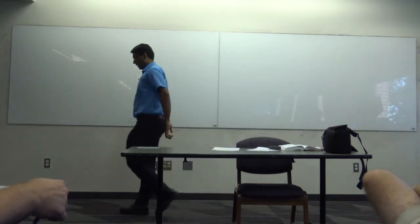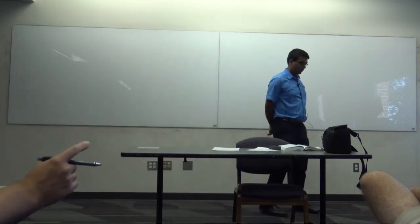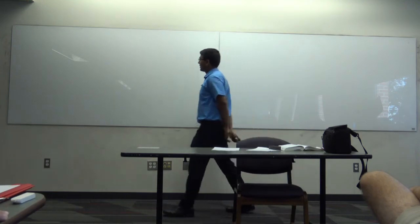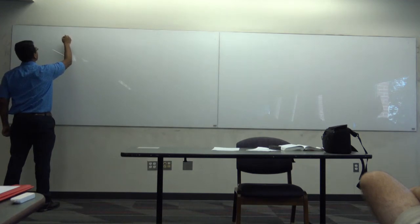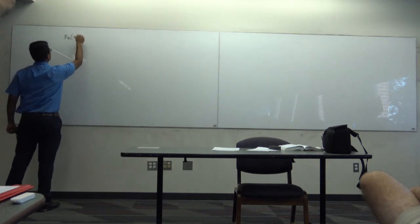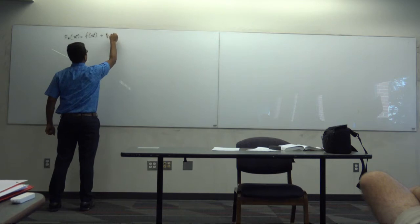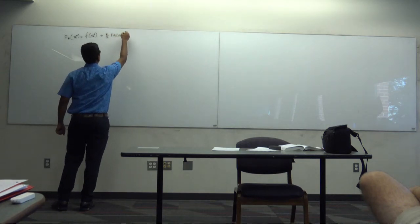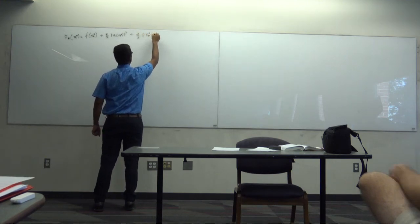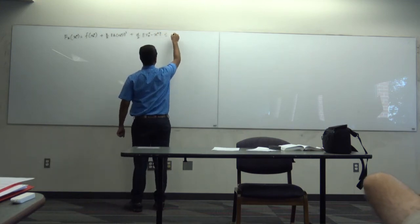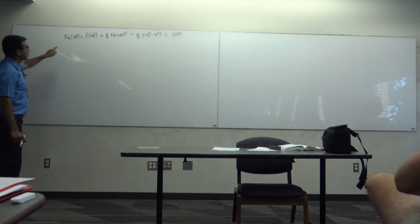Let us continue our discussion about the Lagrange multiplier theorem. There was a hiccup in our previous class — we realized that one inequality doesn't really make sense. So let us go back to that Claim 1 to Claim 2.